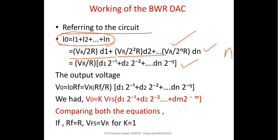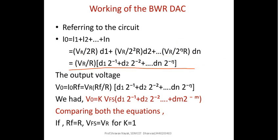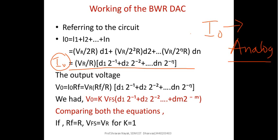Simplifying, taking Vr divided by R as common, you get: D1 times 2 to the power of minus 1, plus D2 times 2 to the power of minus 2, plus D3 times 2 to the power of minus 3, and so on up to Dn times 2 to the power of minus N. This is the equation for the output current I0, which is analog in nature.